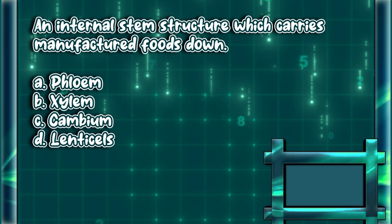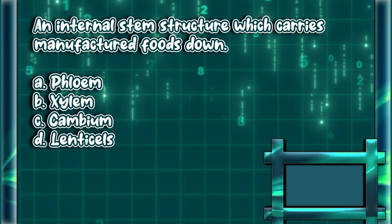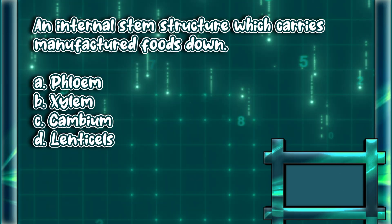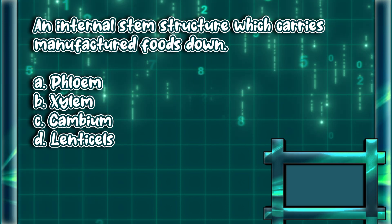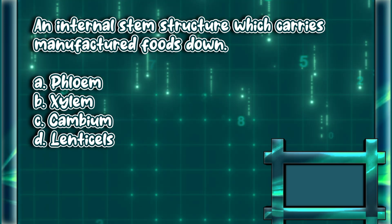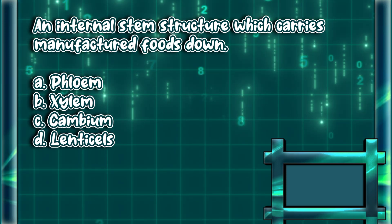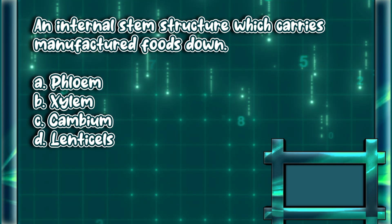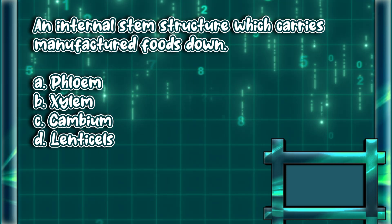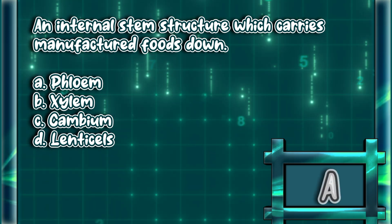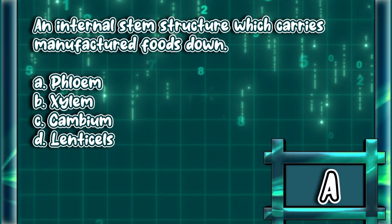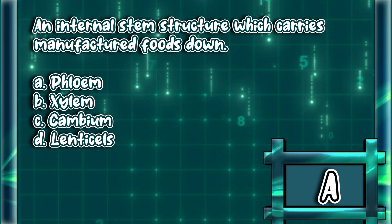An internal stem structure which carries manufactured foods down. A. Phloem. B. Xylem. C. Cambium. D. Lenticels. The answer is letter A.